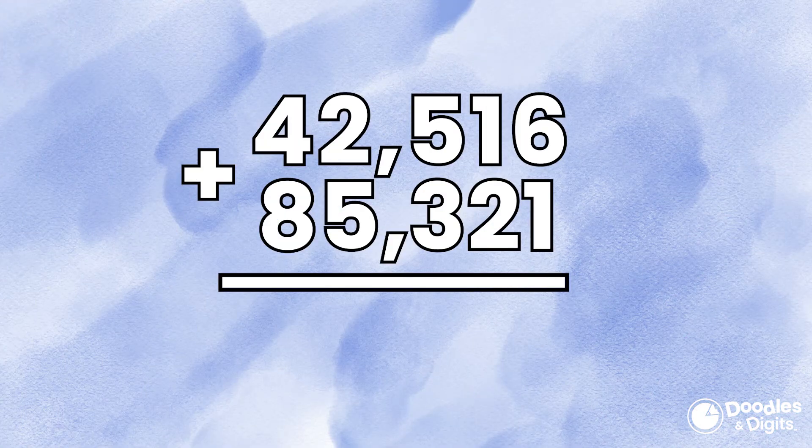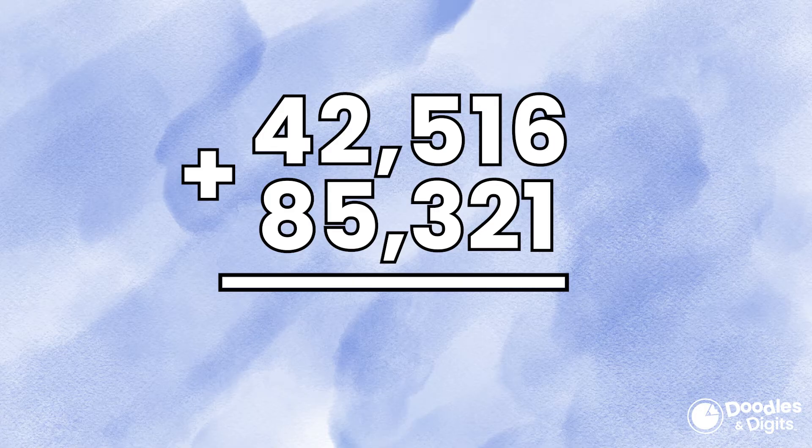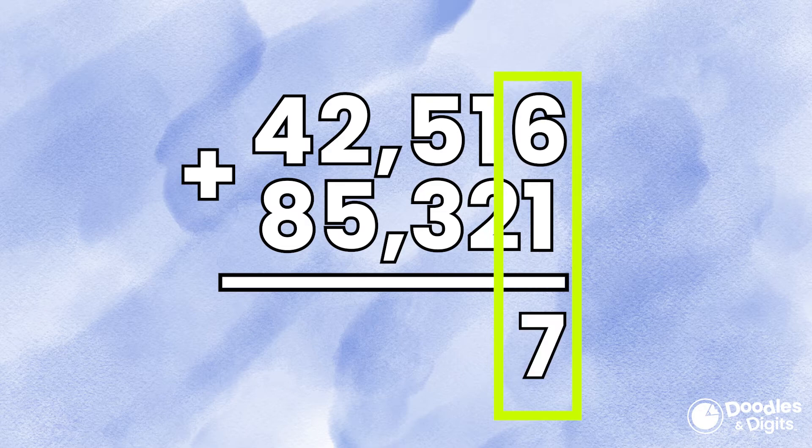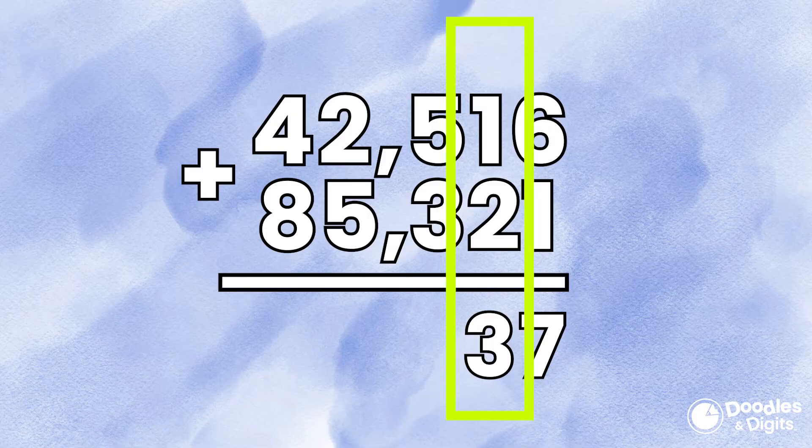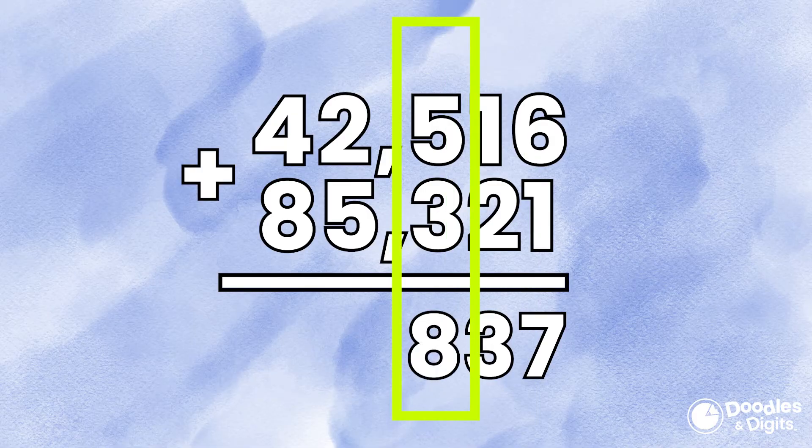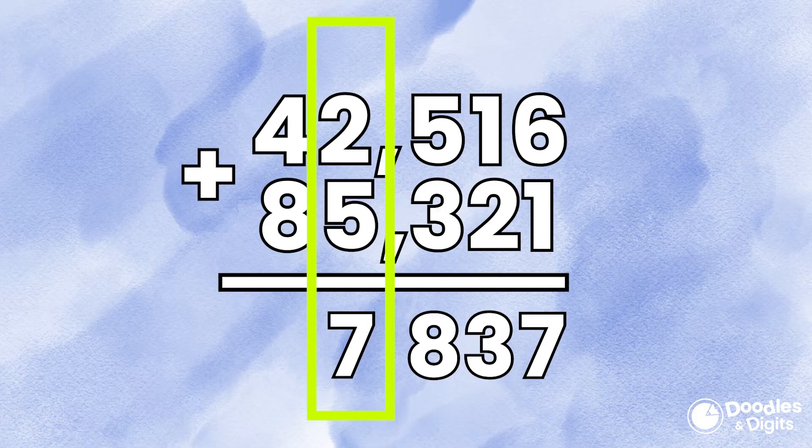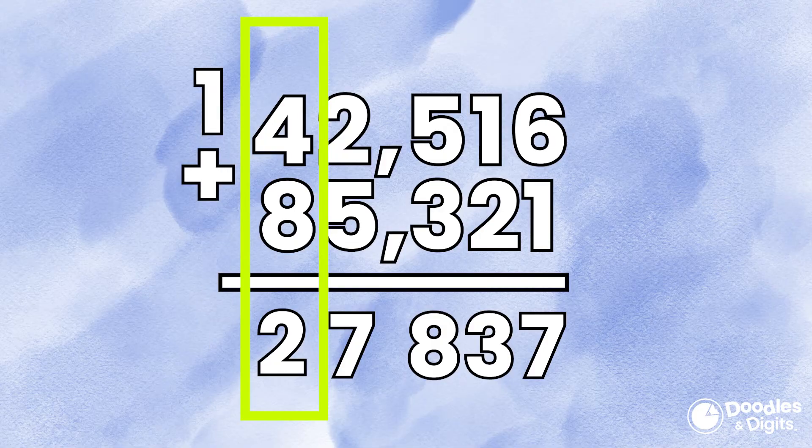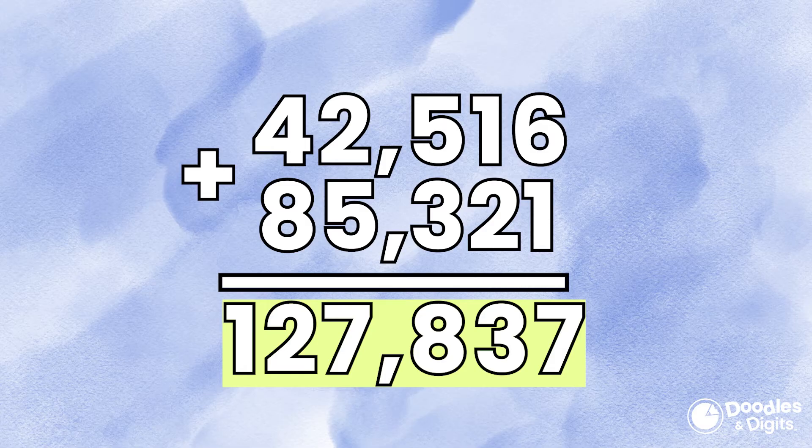Let's try this one. 42,516 plus 85,321. Let's start in the ones column. 6 plus 1 is 7. Tens column 1 plus 2 is 3. 5 plus 3 is 8. 5 plus 2 is 7. And 4 plus 8 is 12. We don't have to carry because there's not another place value. We can put the 12 there and it'll be 127,837.